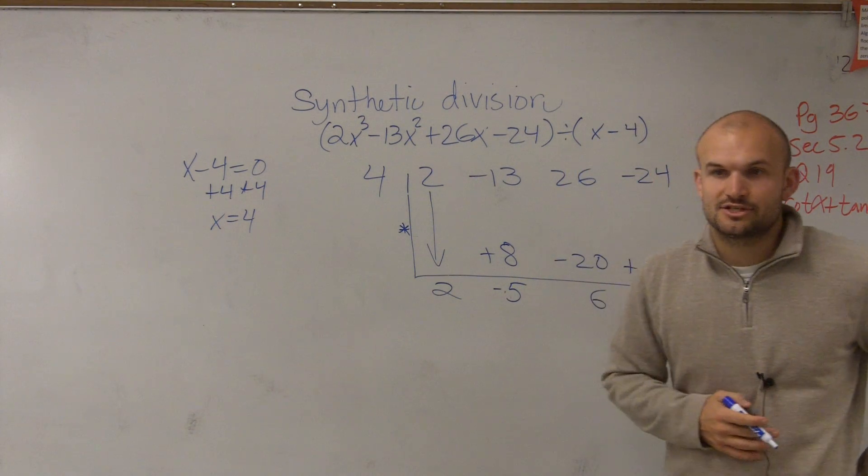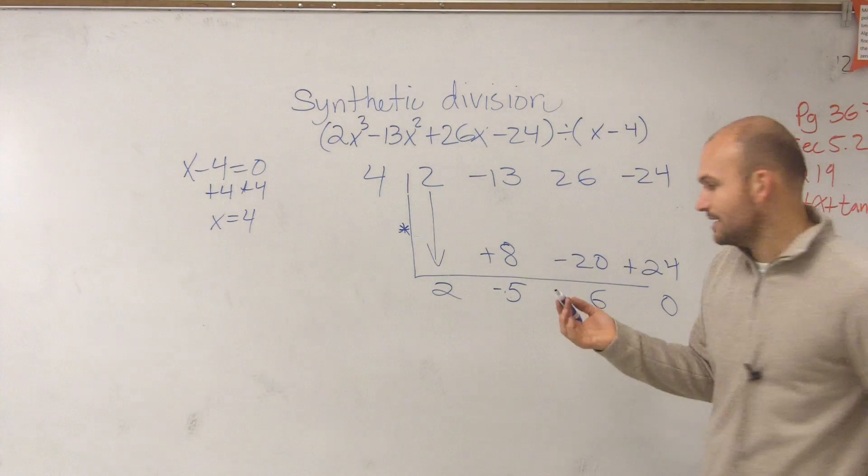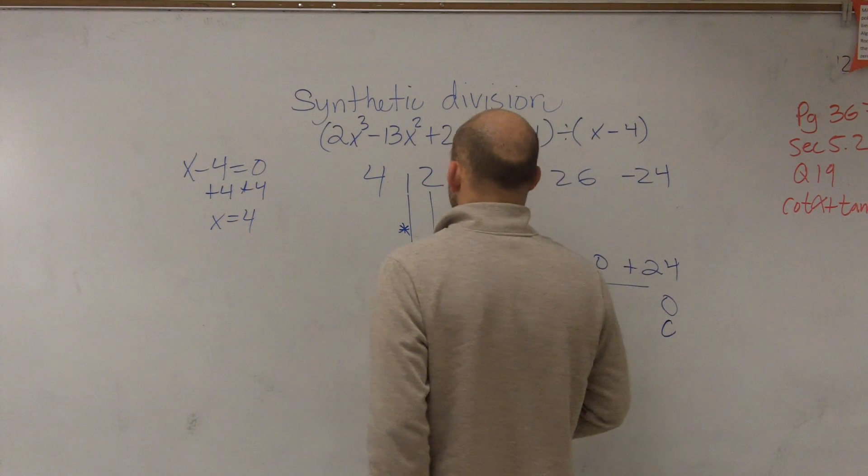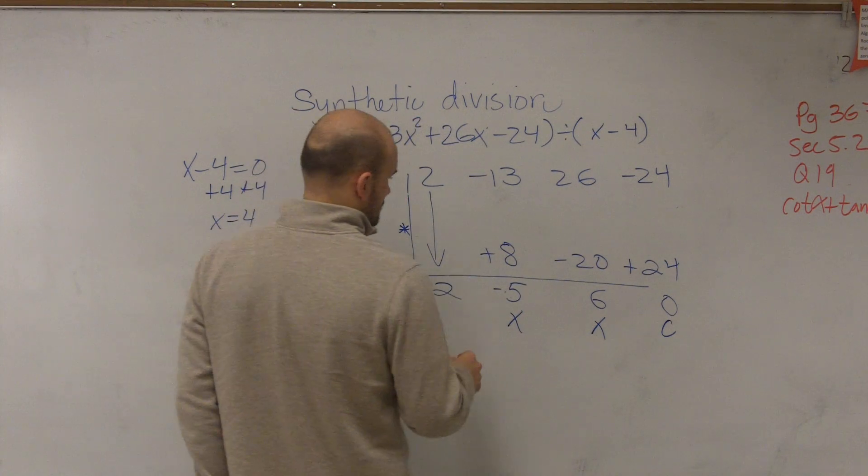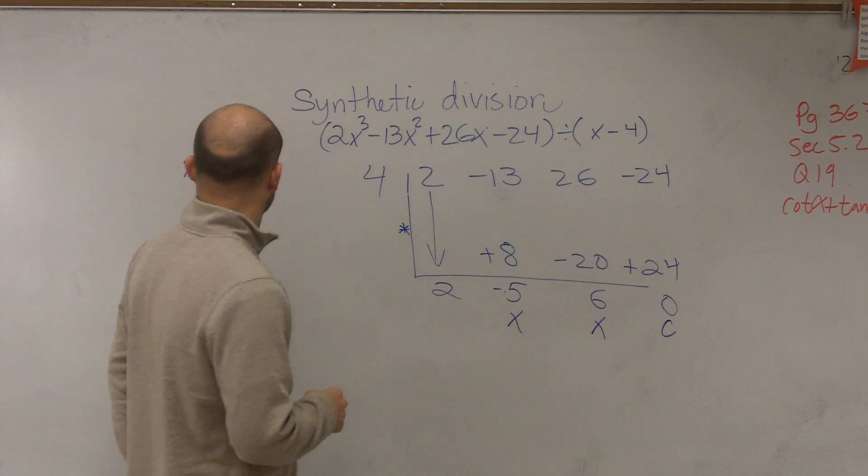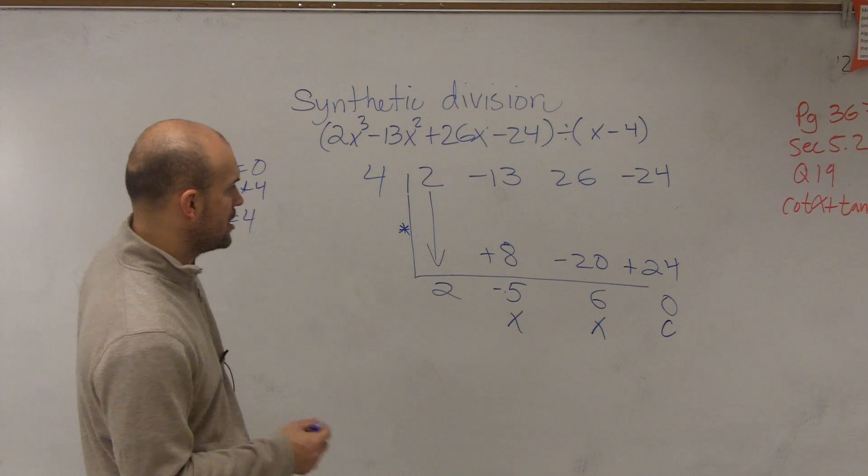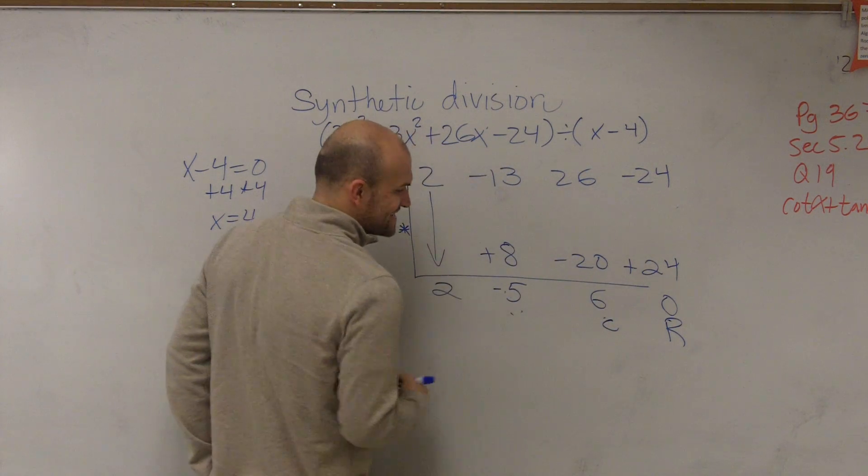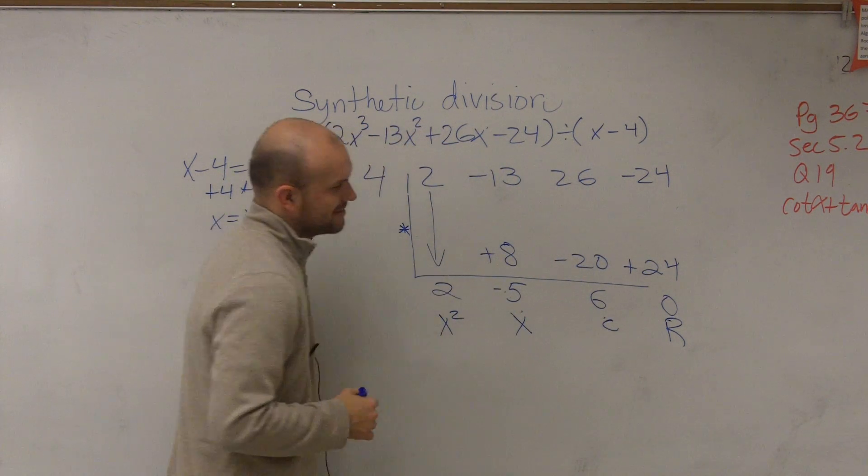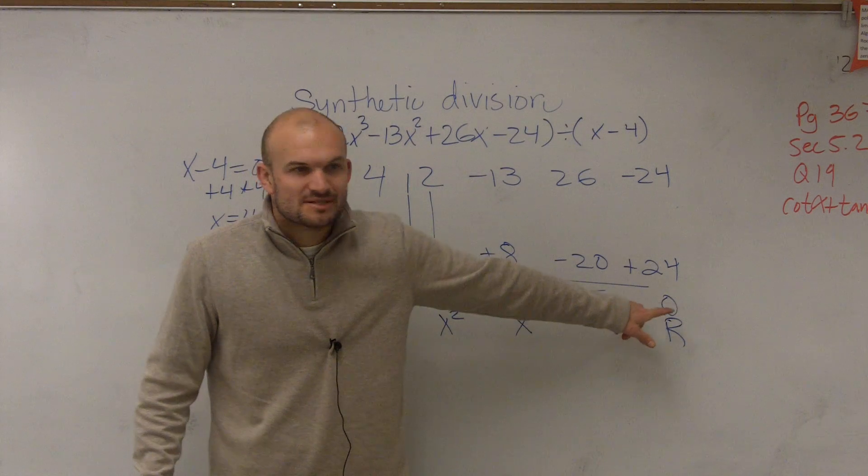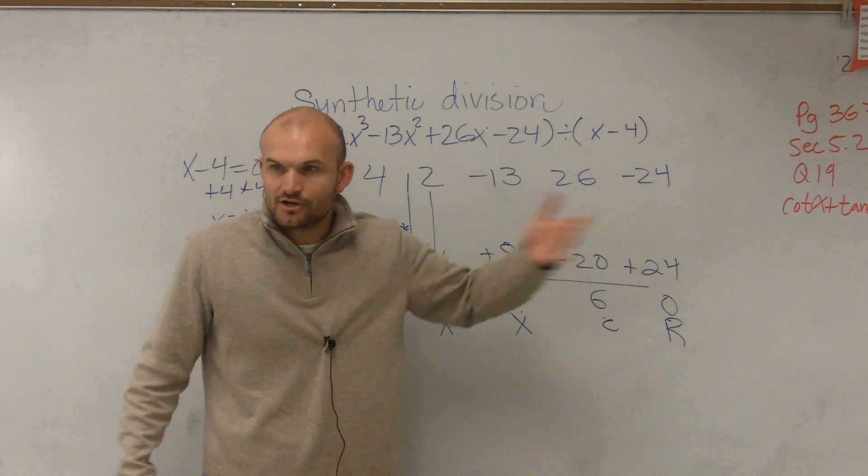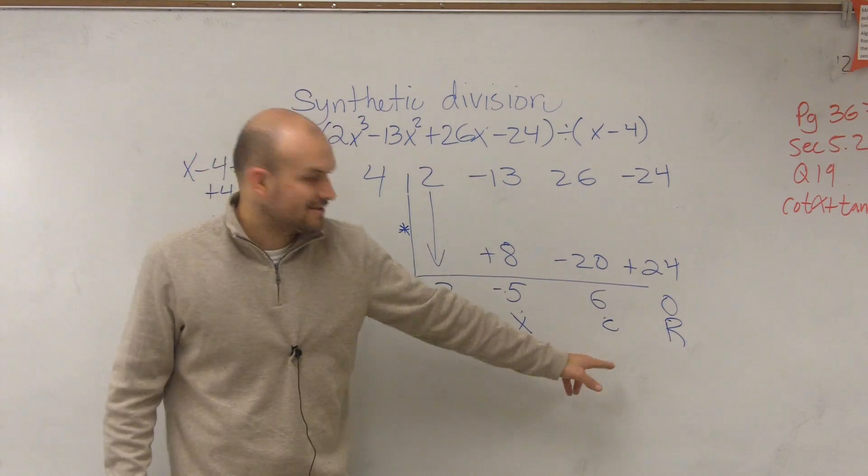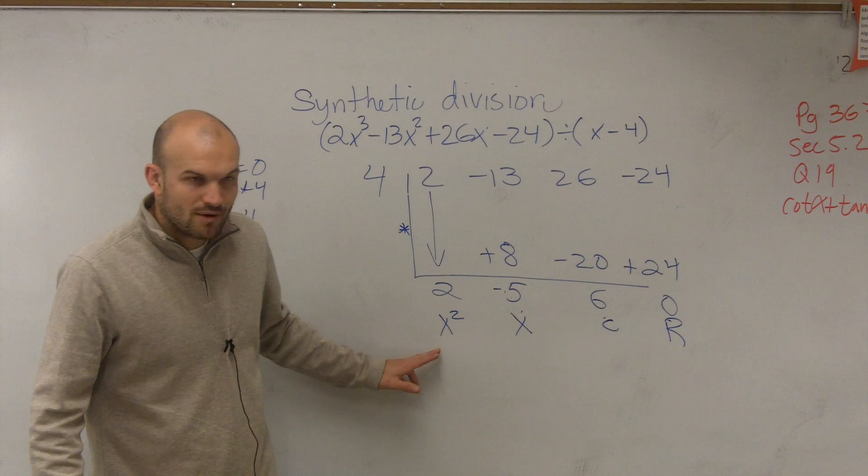So the last step to get your answer is, if you go with constant, linear, quadratic, and what does this get divided by? So, remainder, constant, linear, quadratic. Always your last term is always going to be your remainder. So if you have a remainder, then you write the remainder divided by your divisor. Then the last number is always going to be your constant. This term is going to be your linear and then quadratic.